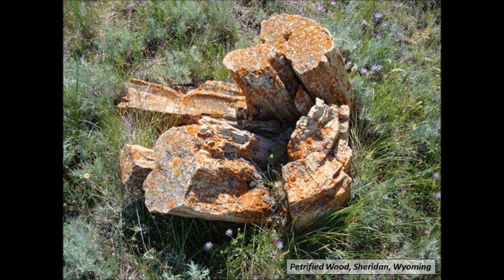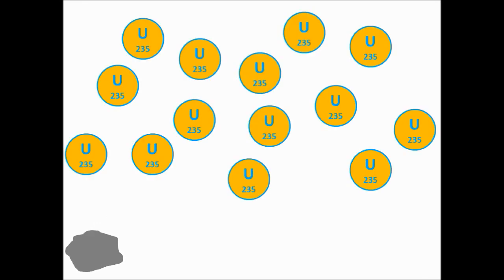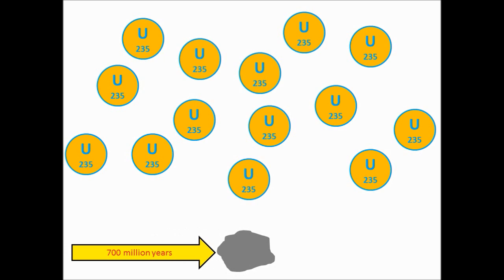Consider a rock sample which contains the radioactive isotope uranium-235, which decays into lead-207. The half-life for this decay is 700 million years. This means that 700 million years after the rock was formed, we know that half the uranium-235 atoms will have turned into lead-207.